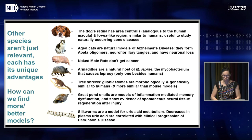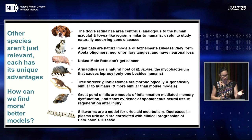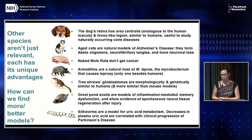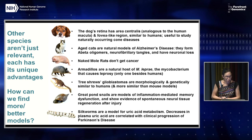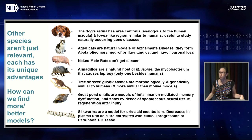I also wanted to remind everybody how important organisms that we don't study often are. The dog's retina has an area centralis analogous to the human macula. Aged cats are natural models of Alzheimer's disease. Naked mole rats don't get cancer. Armadillos are a natural host of the mycobacterium that causes leprosy — the only other organism for which that's the case. Tree shrews' glioblastomas are the most morphologically and genetically similar to humans. Pond snails are models of inflammation-mediated memory dysfunction. Silkworms are a model for uric acid metabolism. The list goes on, but most of it we haven't really revealed.